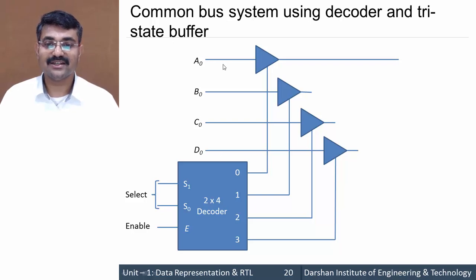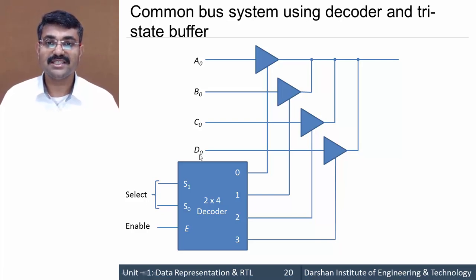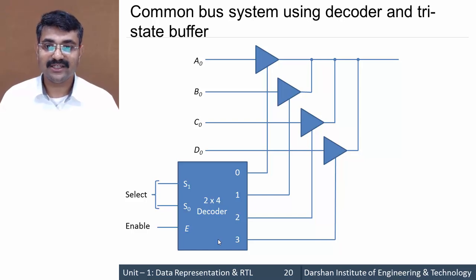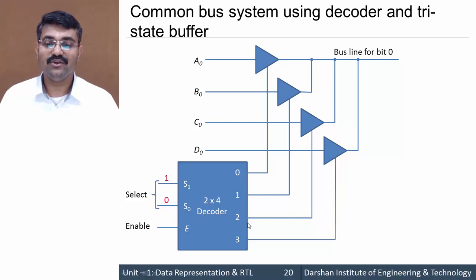The output of all tri-state buffers goes into a single common bus line. For a four-bit register, this block needs to be repeated for each bit: A1, A2, A3, and so on. Now consider providing input to the select lines as one zero — S1=1 and S0=0. The decimal value is two, so the second output line of the decoder gets enabled, producing one on that line while all the rest are zero.